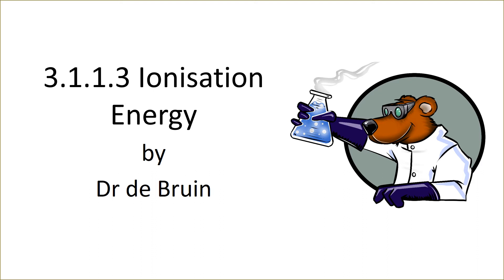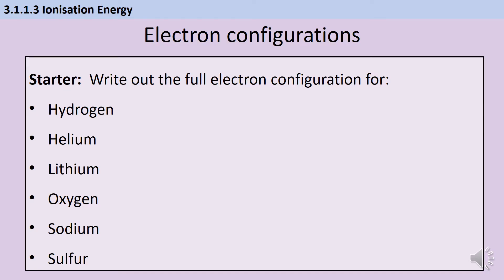This is the second video covering material from section 3.1.1.3 in AQA A-level chemistry. If you haven't already watched the video about electron arrangement, you need to watch that one first before coming on to this one. Before we can talk about ionization energy, it's really important that you're very confident with how to work out the electron arrangement or electron configuration of a particular element.